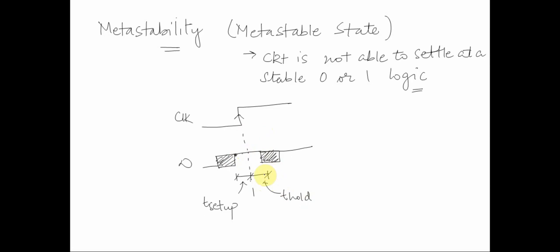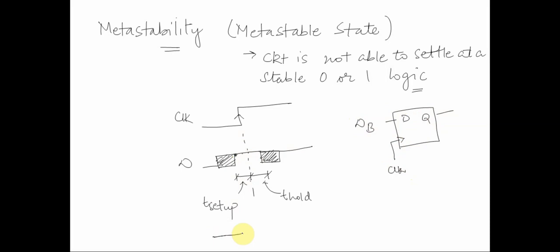When a setup and hold time violation happens, this results in a problem in the circuit. Let's assume we have a D flip-flop and the input changes in this time frame. If input DB toggles — which is like having a setup time violation — what could happen is the output QA could latch onto a value zero or one which is undeterministic. It might not be able to capture a zero or a one, and we don't know which value it will capture. This particular problem is called the metastability problem.